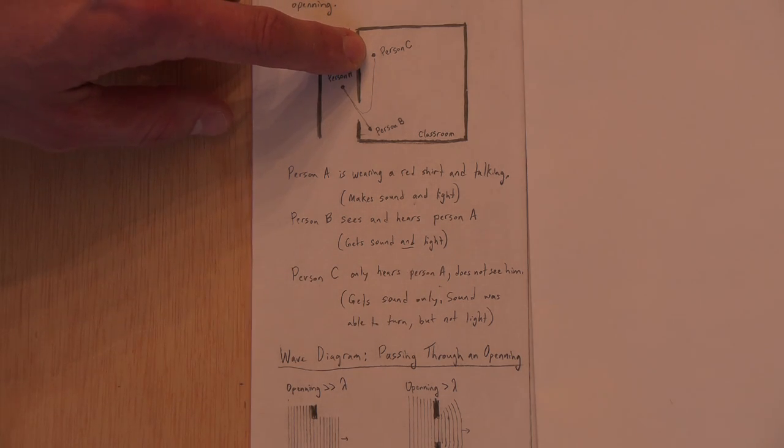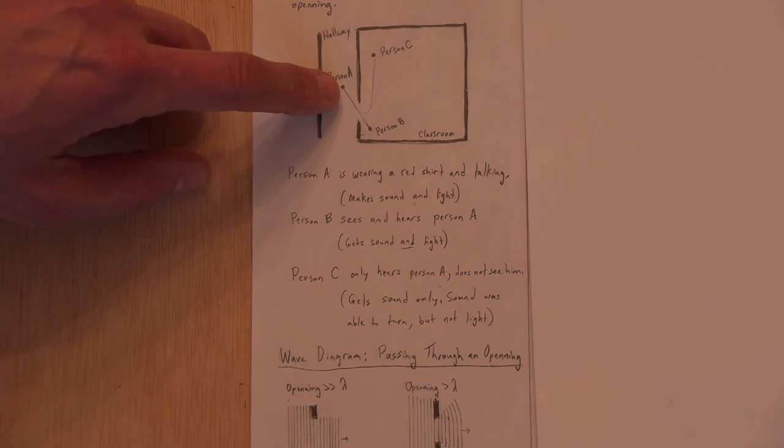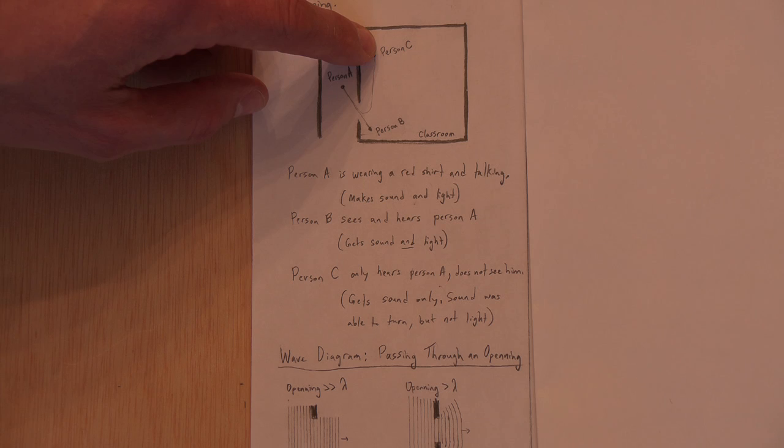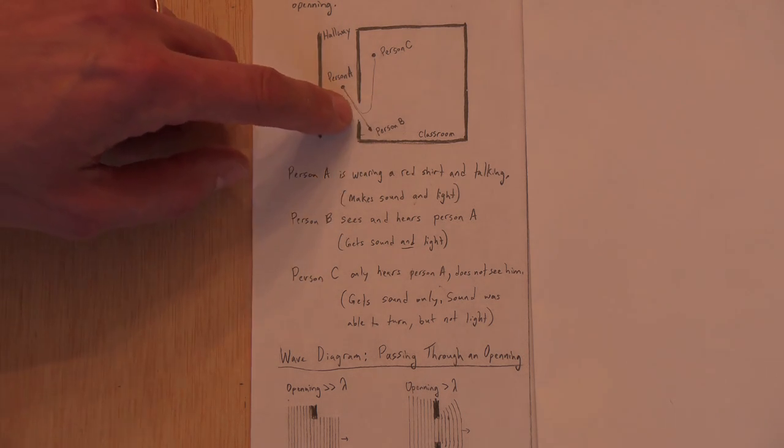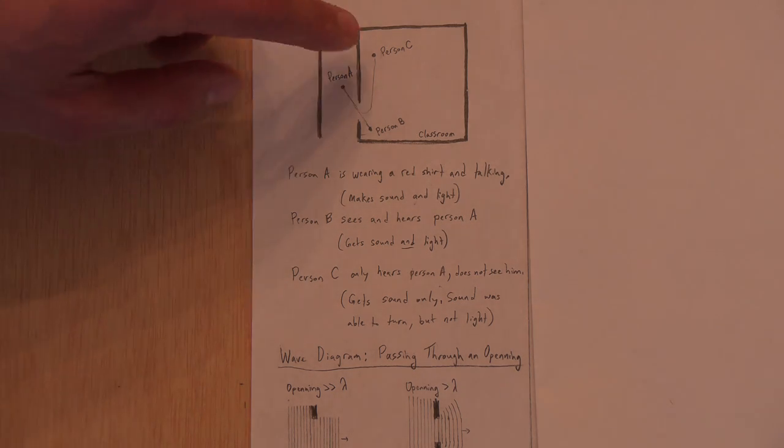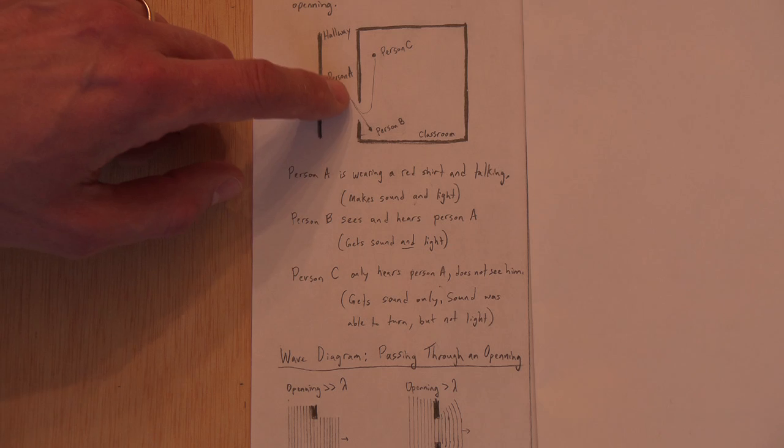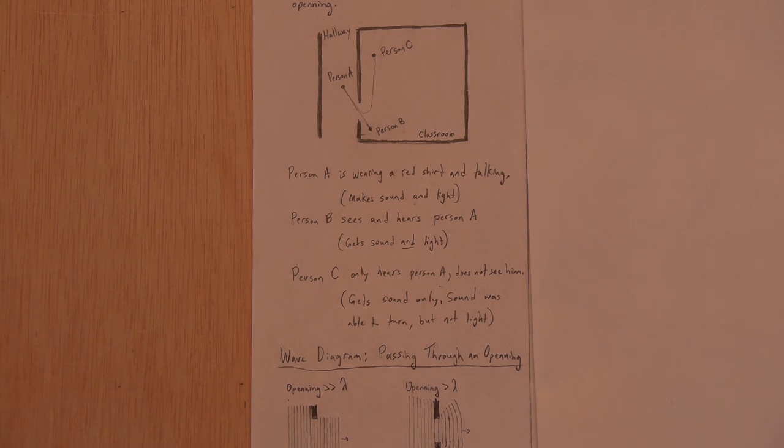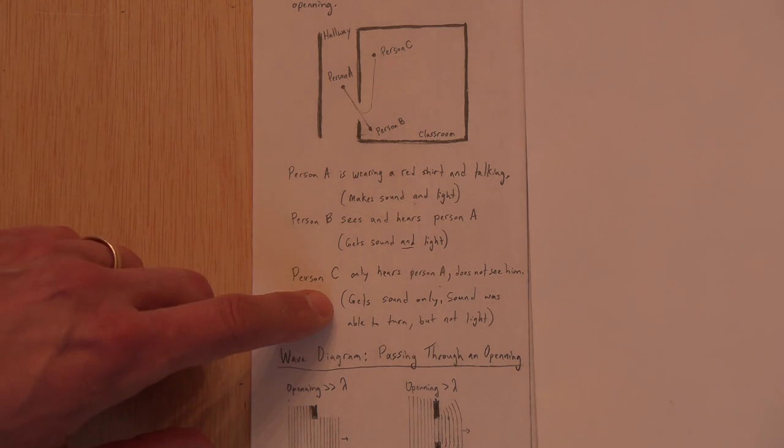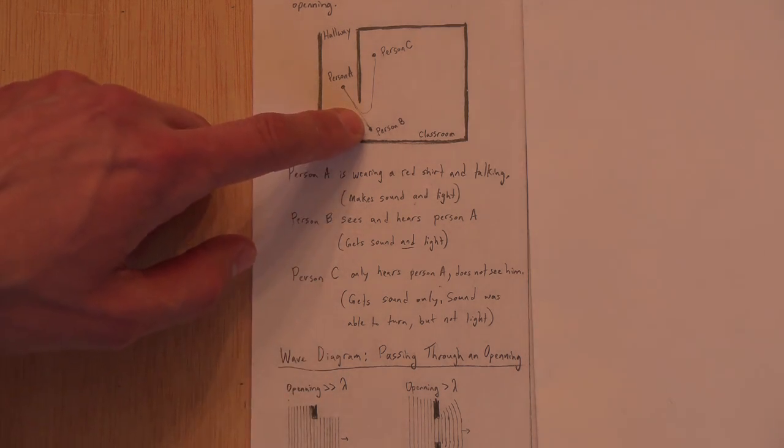Person C over here, sitting in the back of the room, they only hear me. If I'm talking here and you're over here, you would hear me. I could say, hey, class, I'm out in the hallway. And you would hear. Even though you look and you cannot see me. So your eyes are looking toward the doorway. My light is not curving around. But my sound is curving around.